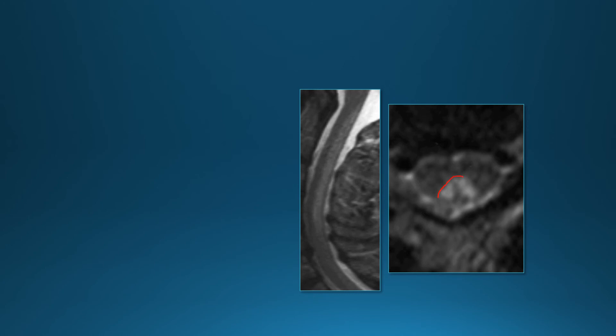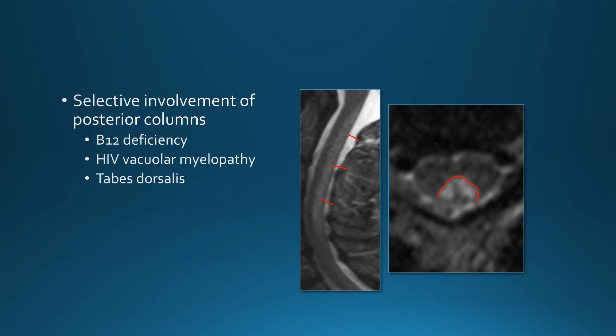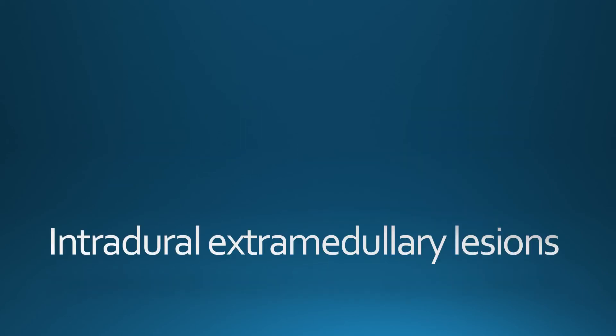This patient has abnormal T2 signal fairly limited to the dorsal columns, visible on sagittal images — selective involvement of the posterior columns. Three things can cause this: the classic is B12 deficiency, it can also be seen in HIV patients (possibly also related to B12 deficiency), and tertiary syphilis — tabes dorsalis — also involves the posterior columns. This transitions us to intradural extramedullary or leptomeningeal lesions.